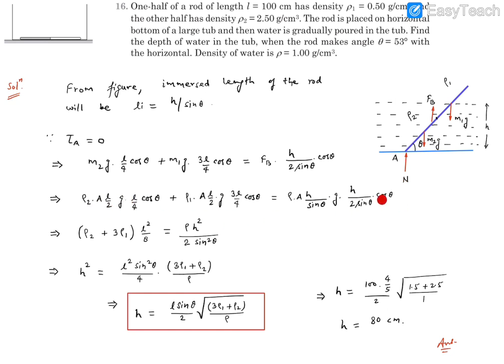Now you'll find cos θ getting cancelled out, A is getting cancelled out, and g is getting cancelled out. So here you'll find ρ₂ into L² by 8, from here you'll find 3ρ₁L² by 8. So we take L² by 8 as a common.